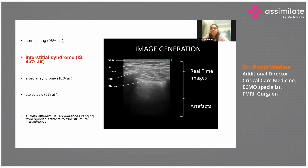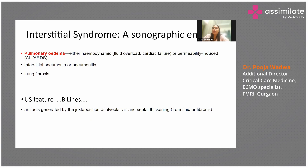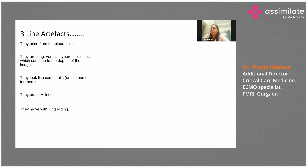Now we will see interstitial syndrome. In interstitial syndrome, you have pulmonary edema, interstitial pneumonia or pneumonitis, and lung fibrosis. The key feature is B-lines — artifacts generated because of the juxtaposition of the alveolar layer and septal thickening, which may be due to fluid or fibrosis.